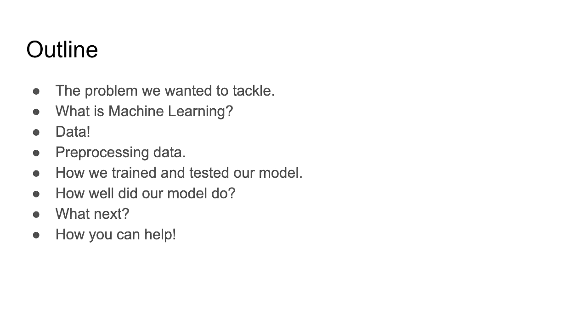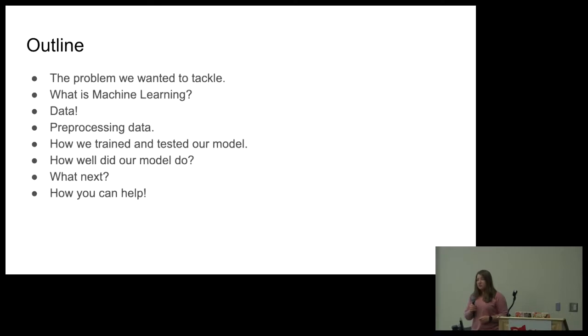I'm going to give you guys a quick outline of what I'm going to talk to you about today and what I hope you take away from the talk. First, we're going to go through what the problem we addressed is and how we wanted to solve it. I'll give you a quick, basic understanding of what machine learning is and how we process through projects with that. We'll go over the data because the most important thing in machine learning is the data set you start with. Pre-processing the data, the hardest, most boring step. How we trained and tested our model. How well our model did. Our next steps with the data that we currently have. And how you can help.